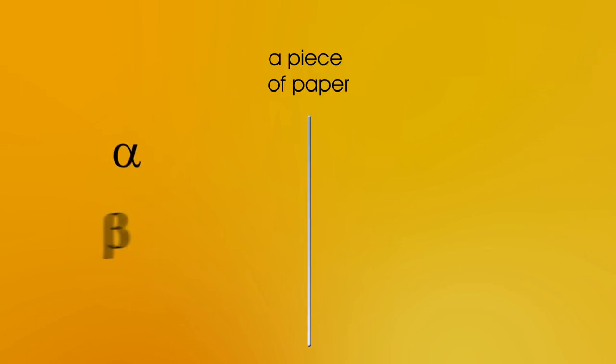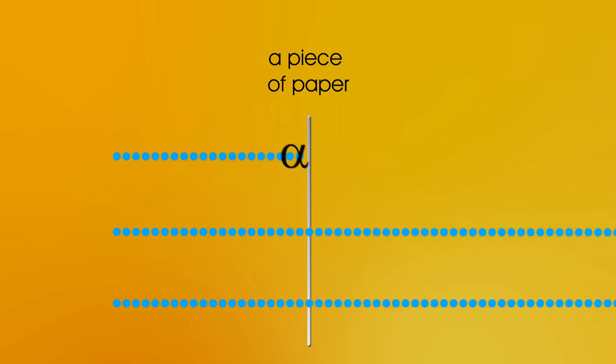First off, we'll just place a piece of paper in the middle. As we can see, the paper stops the alpha, but both beta and gamma go straight through. So just a thin sheet of paper will stop alpha completely, as with any other thin material like your clothing.